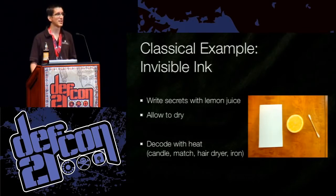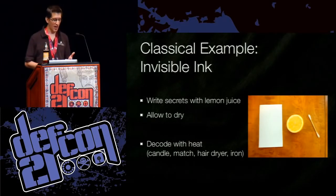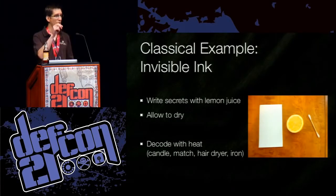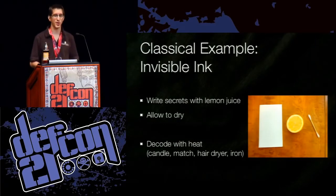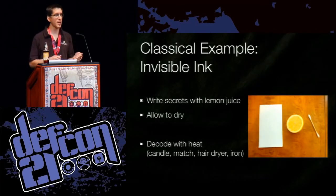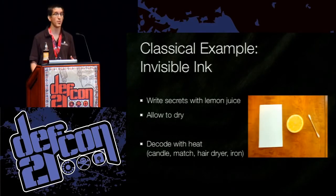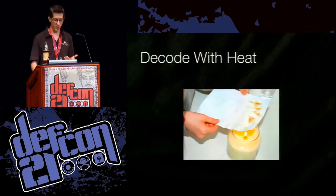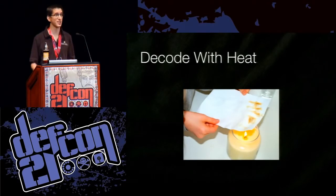The next classical example is invisible ink. This is a very simple but quite effective technique. You would use lemon juice or something acidic, write on top of a piece of paper with this liquid, allow it to dry, and then deliver the paper to your recipient. The paper would have other writing on it, so it looks like it says one thing. But the acid in the lemon juice breaks down parts of the paper. When you put the paper over heat, it would start to burn, but the parts broken down more by the acid would burn first — turning darker — and you could read the hidden message. This is a lot of fun to do with young kids.